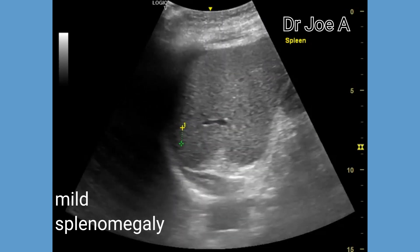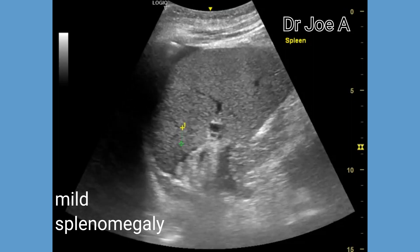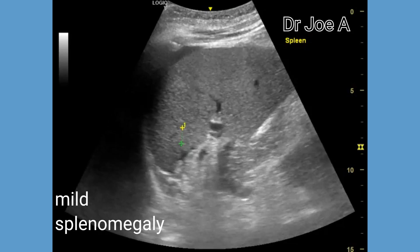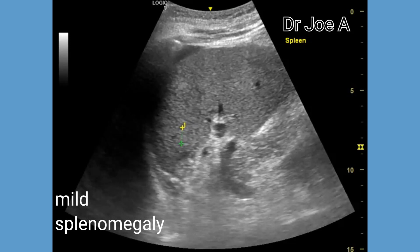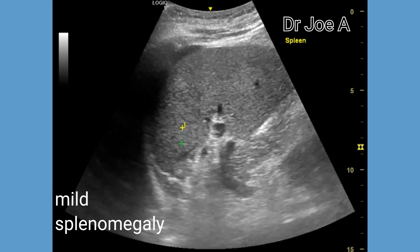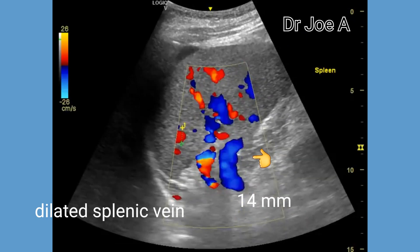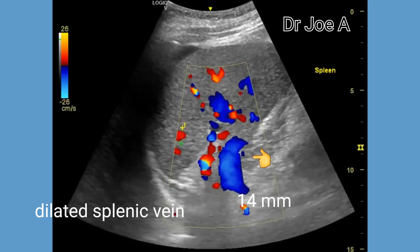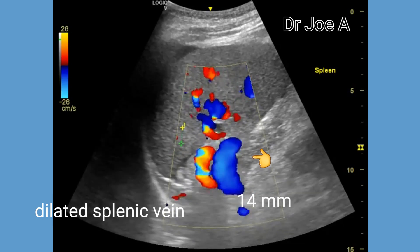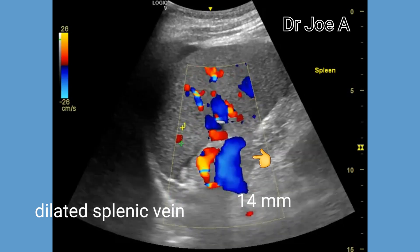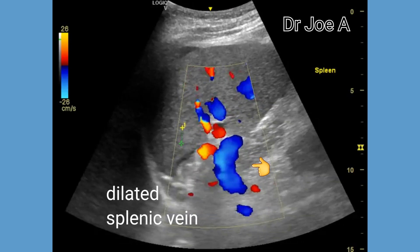Let's have a look at the splenic vein. On color Doppler, the splenic vein measures 14 millimeters in diameter, which is grossly abnormal. Moderate dilation of the splenic vein suggests evidence of portal hypertension.